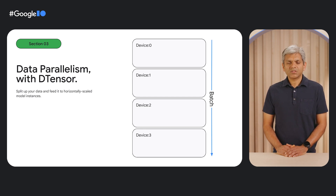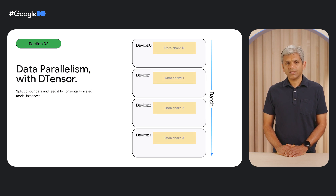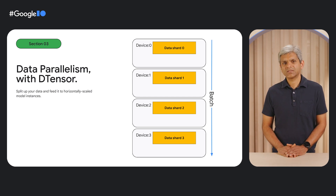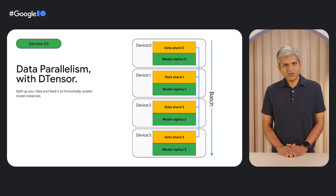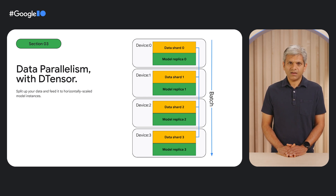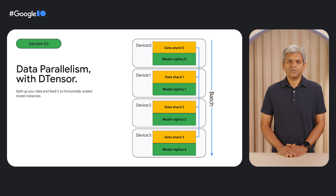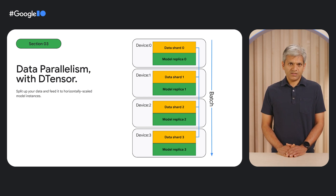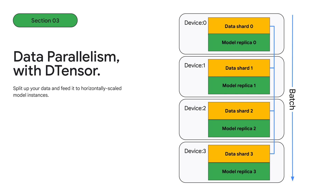Traditionally, ML developers have scaled up their models through data parallelism, which looks like splitting up your data and feeding it to horizontally scaled model instances. Standard data parallelism does successfully scale up training, but with a big caveat: it all has to fit within a single device. As models get bigger, this is no longer a guarantee — you need to be able to scale your models across devices. As you can see here, D-Tensor allows you to safely shard across multiple devices.